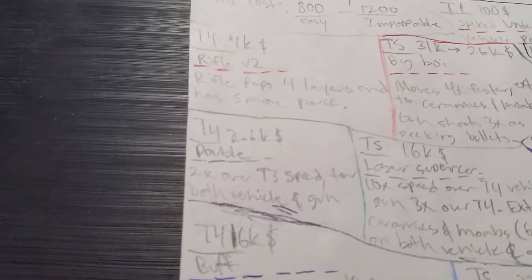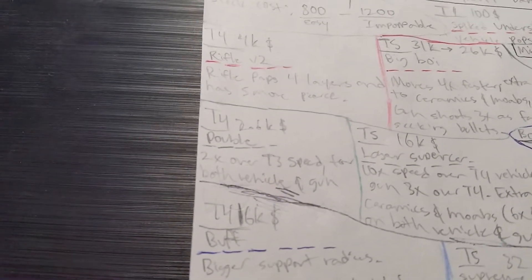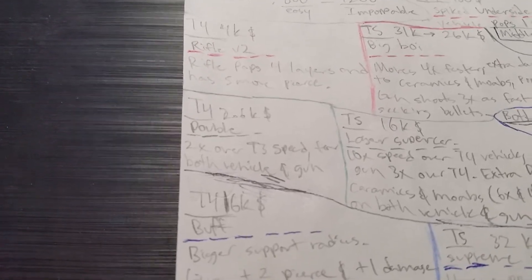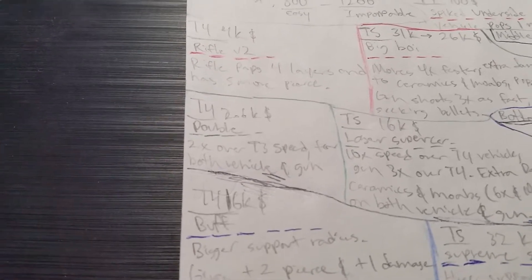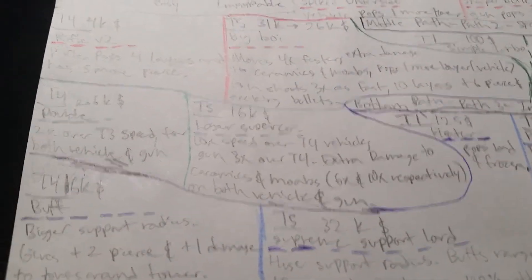Tier 4 is 2,600 dollars, we call it double. It is two times over tier 3 speed for both vehicle and gun.